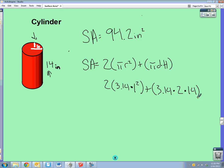And if you do 2 times 3.14 times 1 squared, and you do 3.14 times 2 times 14, 3.14 times 2 times 14, you're going to get 87.92.